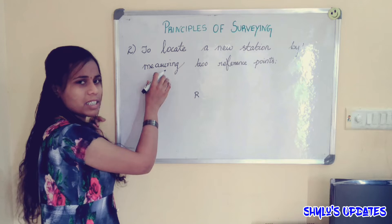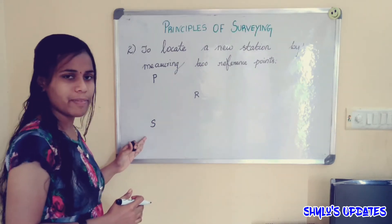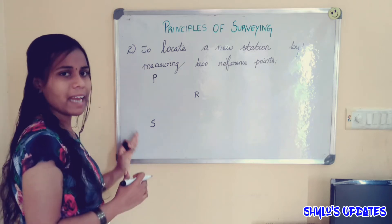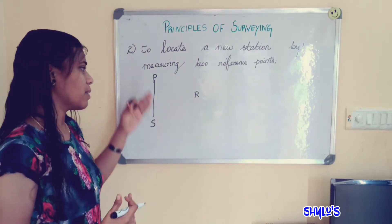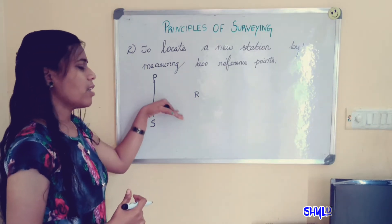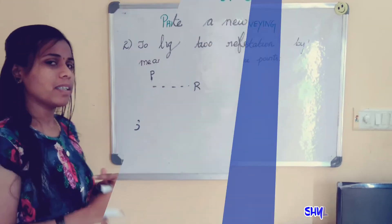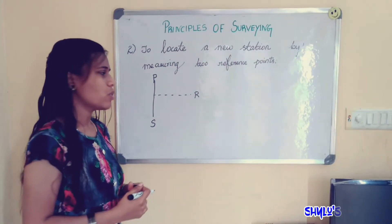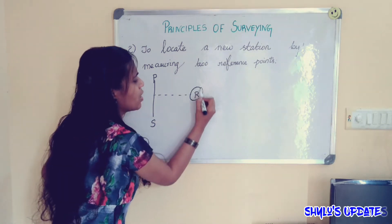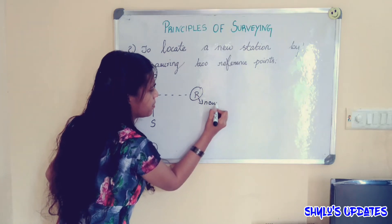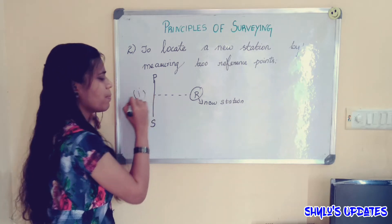Consider this is one building P, and S is another building. First, we have to measure the distance between these two buildings, P and S. When we measure the distance between P and S, we can easily draw a perpendicular line. By doing so, we can easily locate the new station R. This is one method.